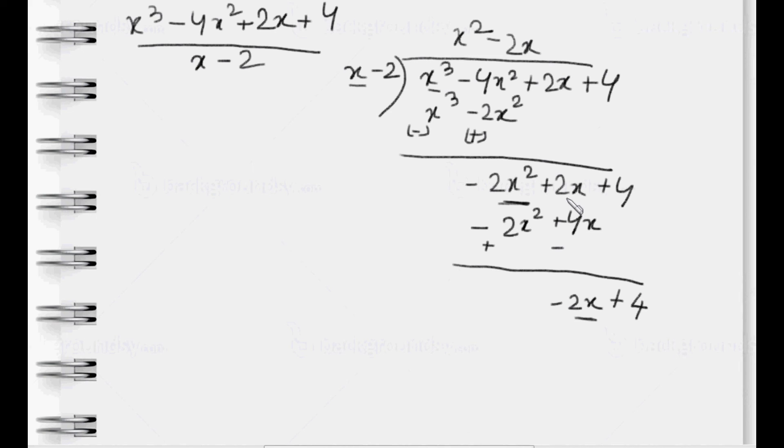Now we have to convert x to -2x. For that, we have to multiply x by -2. And -2 into -2 is equal to +4. Now we subtract again. -2x + 2x cancel out each other. +4 - 4 cancel out each other. Means remainder 0. So division ends here. The quotient is x² - 2x - 2.